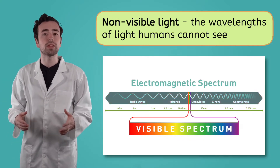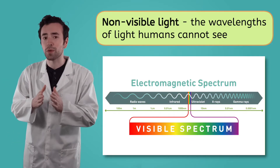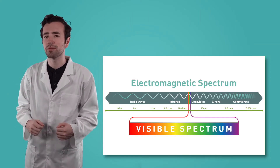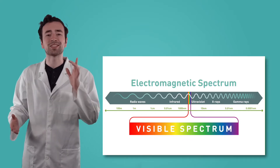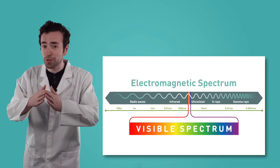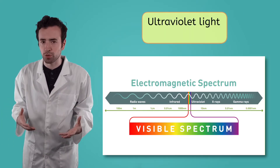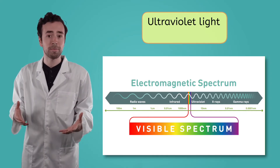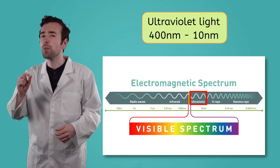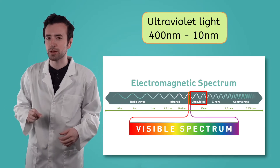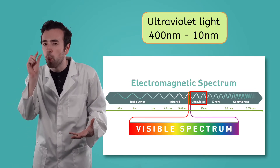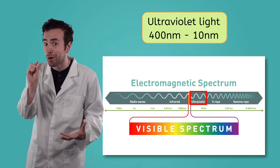Non-visible light can have wavelengths that are much shorter than the visible spectrum. Violet light has the shortest wavelength of the visible spectrum. When the wavelengths are even shorter than violet, we get ultraviolet or UV light. The wavelength of ultraviolet light ranges from 400 to only 10 nanometers. For context, 10 million nanometers make up one centimeter — so we're talking really small here.